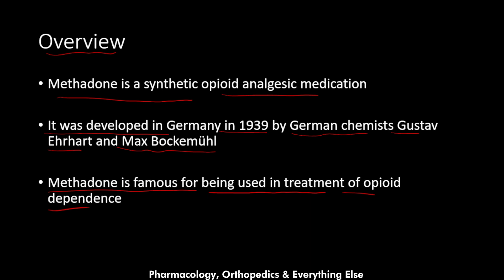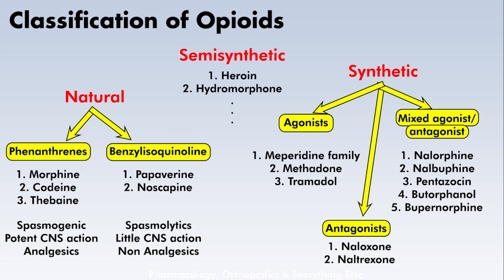Now I know a lot of you are wondering why we would use an opioid to treat opioid dependence — it does seem like a contradiction — but I will explain why in the therapeutic uses section of this video. Now let's explain where methadone sits in relation to other opioids available.